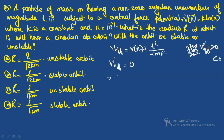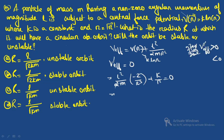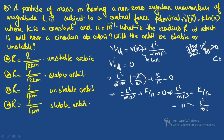Setting V'_eff = 0: d/dr[k·ln(r) + L²/(2mr²)] = k/r − L²/(mr³) = 0. This gives L²/(mr³) = k/r, so r² = L²/(mk), and therefore r₀ = L/√(mk). This matches options C and D.